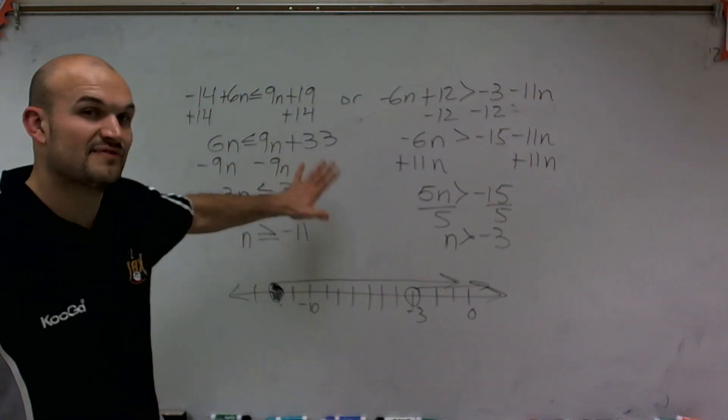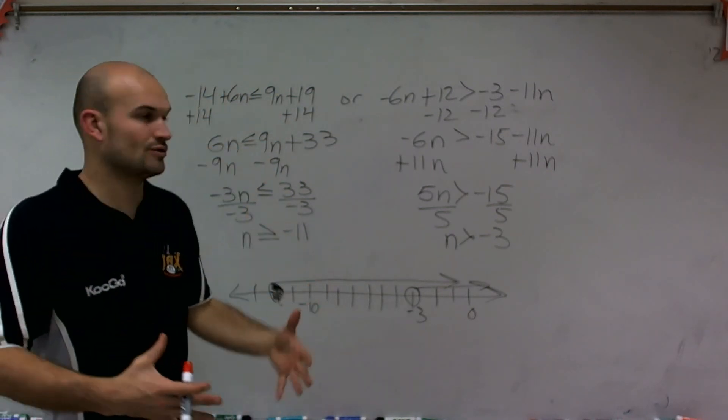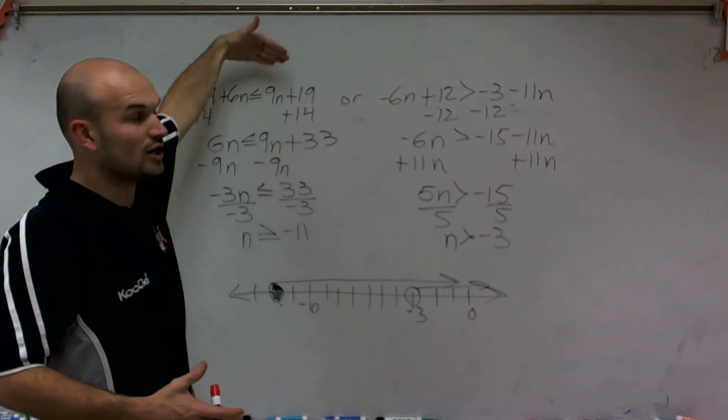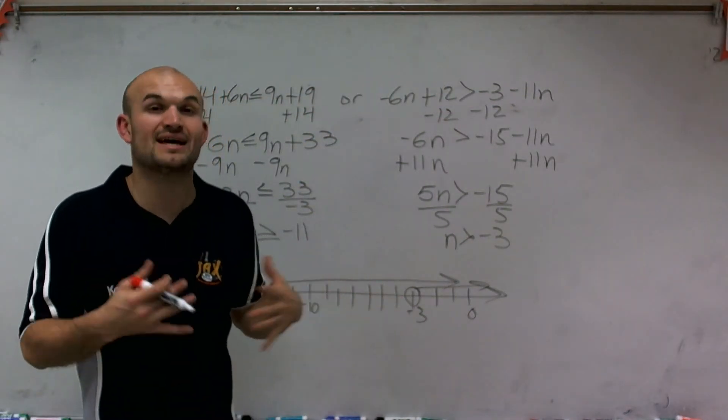Now the statement, it's very important for us to understand the compound statement. It says for our inequality to be true, it has to be true for this inequality, or for this inequality. It does not have to be true for both of them, like an and inequality.